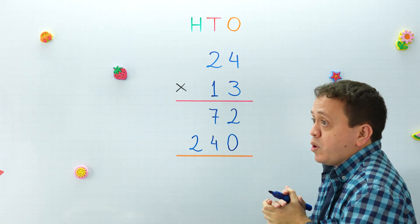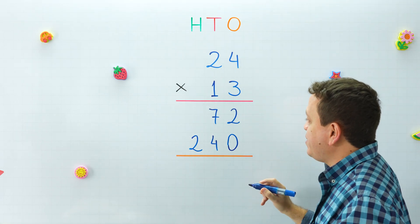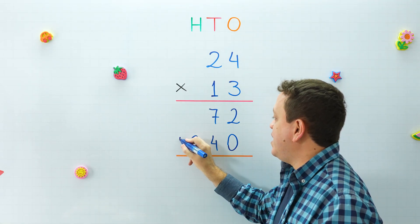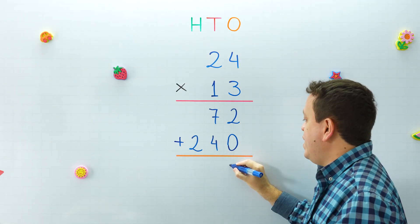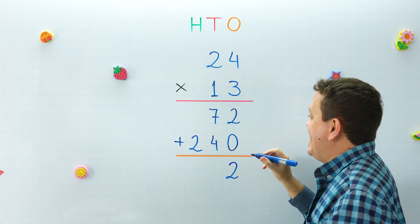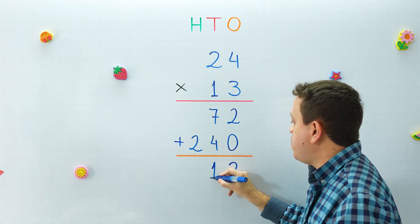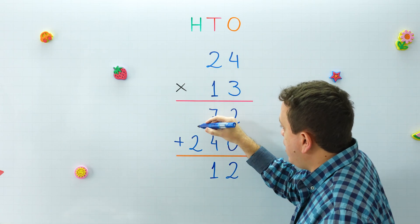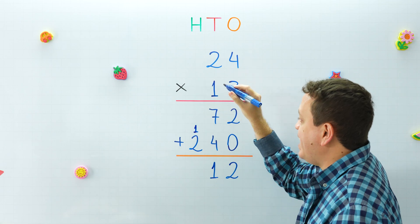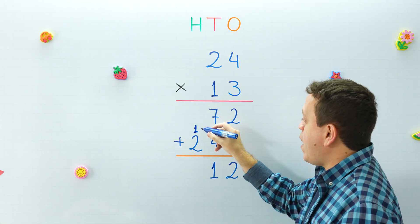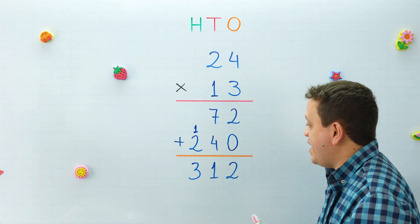For the third step we just need to add these two numbers together to get our final answer. Two plus zero equals two. Seven plus four equals eleven — put the one here and carry the other digit to the hundreds column. Finally, one plus two equals three.